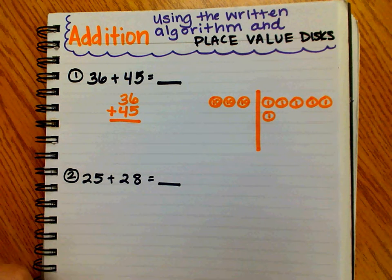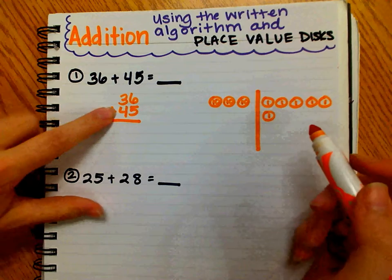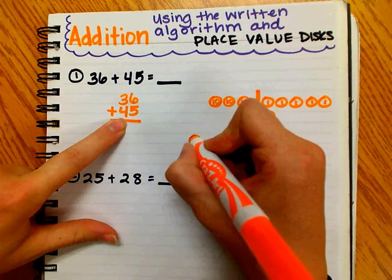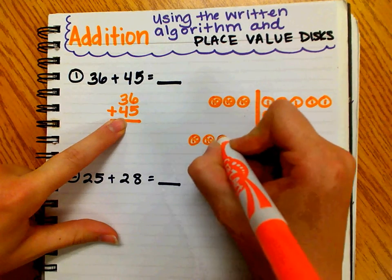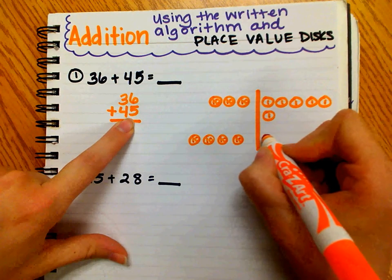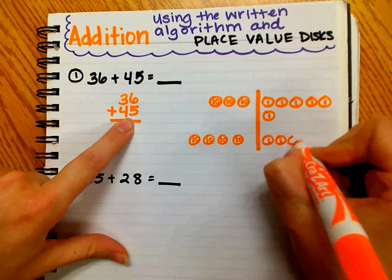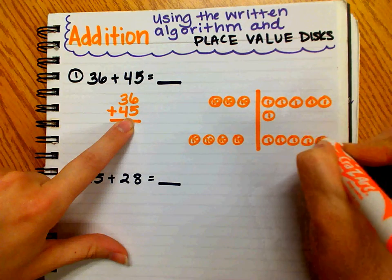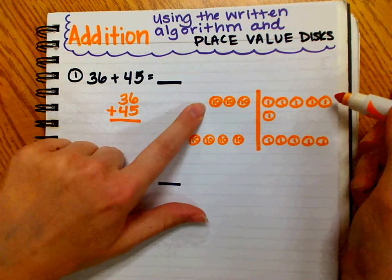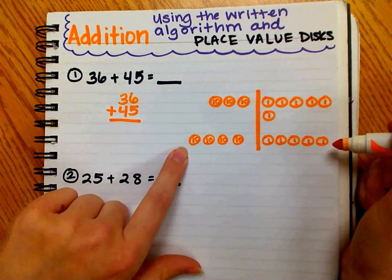Now I can draw and model my second number, 45. Forty-five has four tens. One, two, three, four. And five ones. One, two, three, four, five. So now I have thirty-six on the top and forty-five on the bottom.